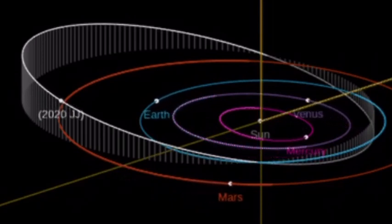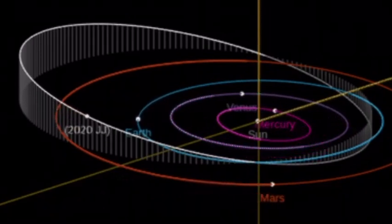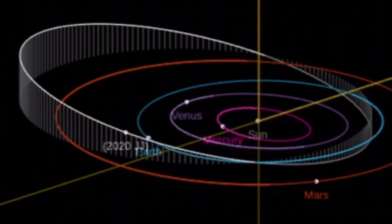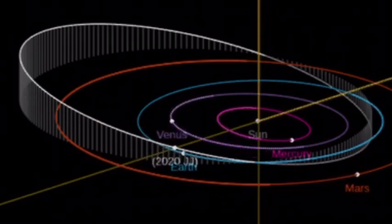Asteroid sneaks past satellites in one of the closest flybys on record. No one saw it coming until it was right on top of us.